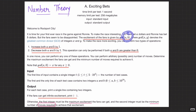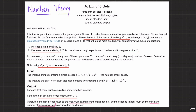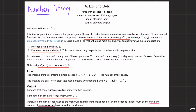Excitement is basically GCD of two numbers a and b. We are given two numbers a and b, and we want to maximize this excitement — the GCD of these two numbers — by performing operations. The operations are: either increase both a and b by one, or decrease both a and b by one. The decrease operation can only be performed if both a and b are greater than zero.